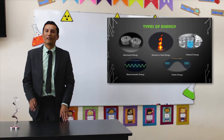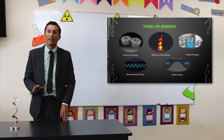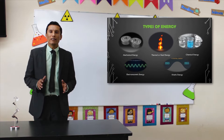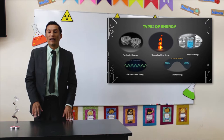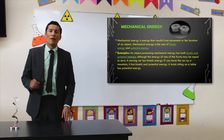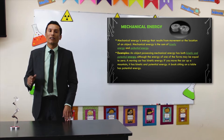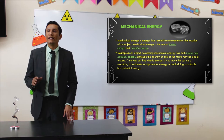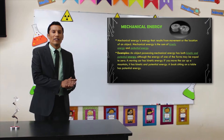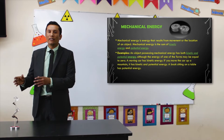These are five types of energy. There are more types, but today we're going to learn these five. Mechanical energy is energy that results from the movement or the location of an object. Mechanical energy is the sum of kinetic energy and potential energy.